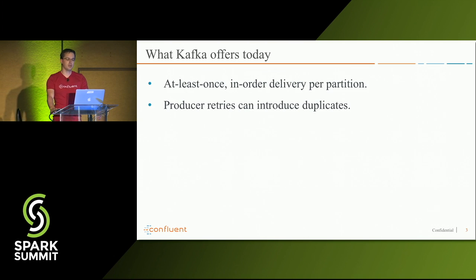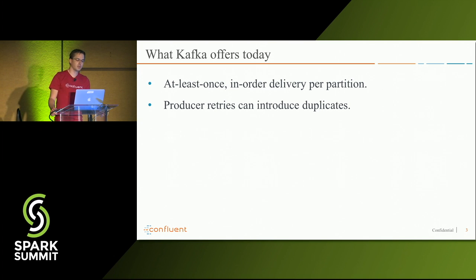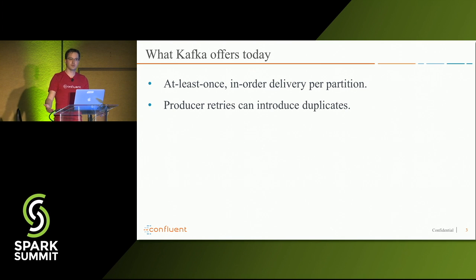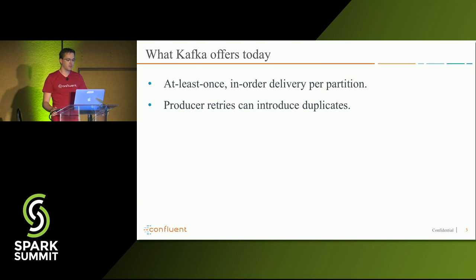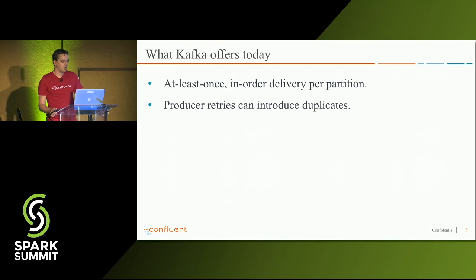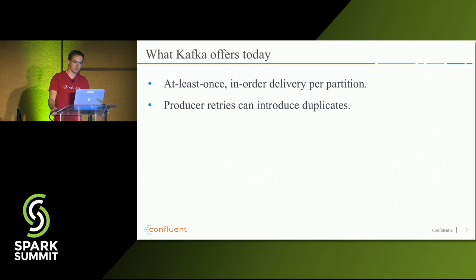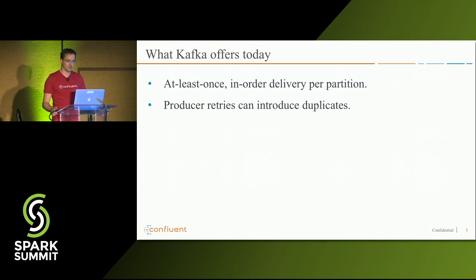Today, Apache Kafka offers at-least-once in-order delivery per partition. That basically means if you have a Kafka consumer subscribing to some topic and an error occurs and the consumer recovers, it might read some messages multiple times. On the other hand, if you write to a topic and something goes wrong, a producer might retry, and this could result in duplicate writes.